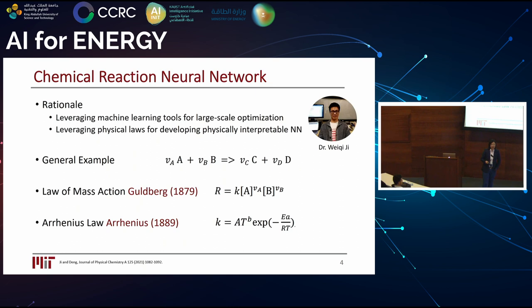The fundamental rationale is that we want to leverage machine learning as a tool for large-scale optimization to deal with complex chemistry. We also want to incorporate physics into the neural network — specifically into the architecture — such that the model can be physically interpretable.